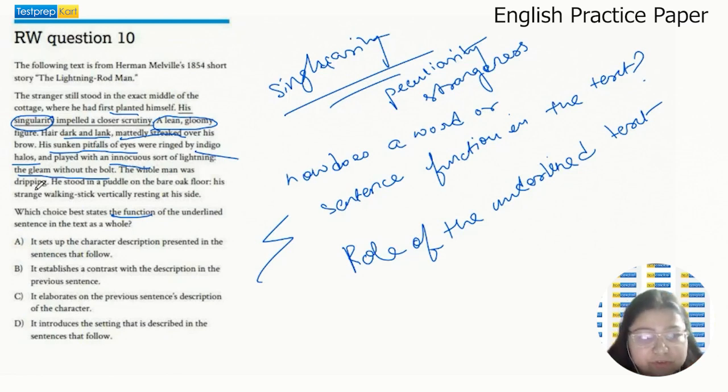The whole man was dripping. So he was wet, which tells us that it was probably raining outside. He stood in a puddle on the bare oak floor. So he was dripping and the water falling from his body and clothes made a puddle on the floor. His strange walking stick vertically resting at his side. So he also had a walking stick, which he kept by his side.